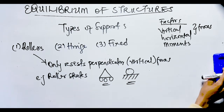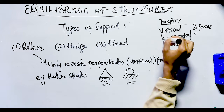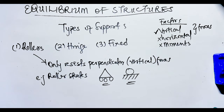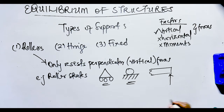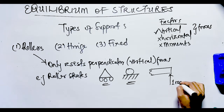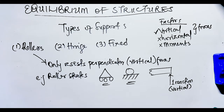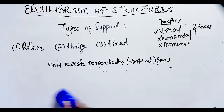To find the number of reactions a roller support has, we consider what forces it can and cannot resist. Since a roller support can only resist the vertical force — it cannot move horizontally or rotate — it has just one reaction. So all roller supports have one reaction because they can only resist one force, which is the vertical force.